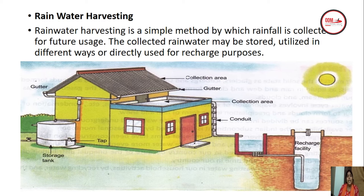Rainwater harvesting is a simple method by which rainfall is collected for future usage. The collected rainwater may be stored and utilized in different ways or directly used for recharge purposes. Rainwater from the collection area passes through pipelines to a storage tank, where it can be filtered and used through taps, or directly channeled underground for recharge and reuse.